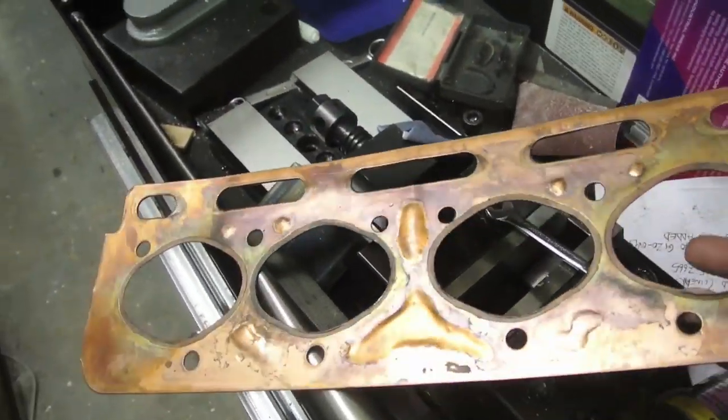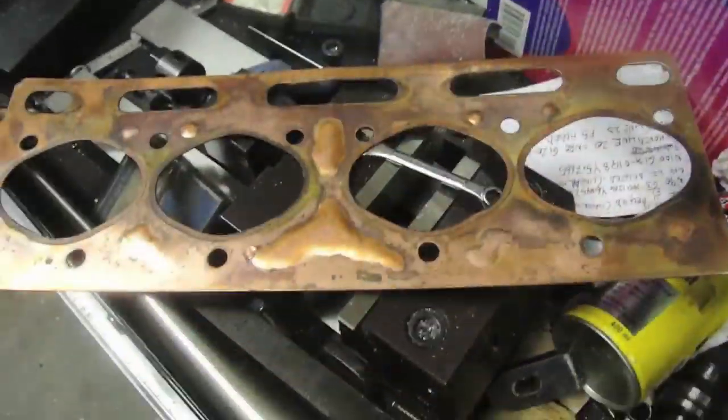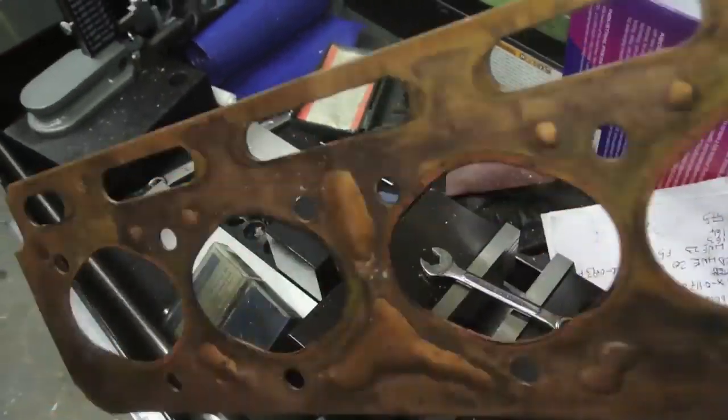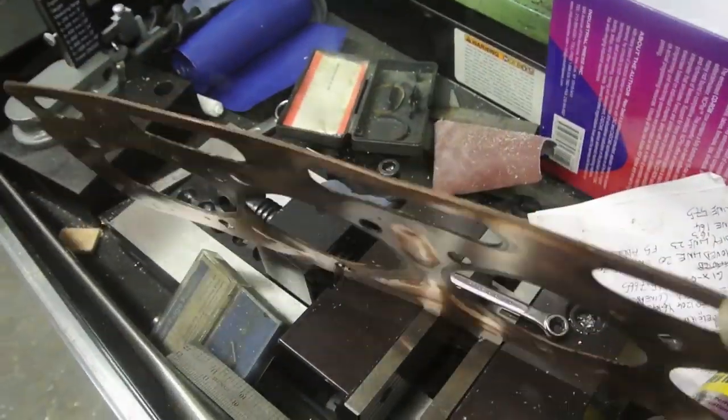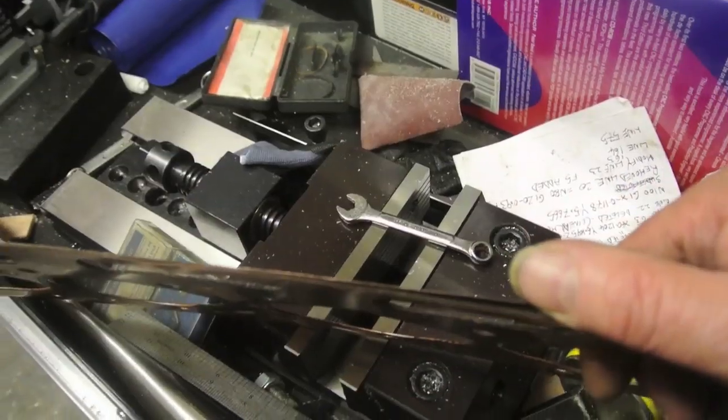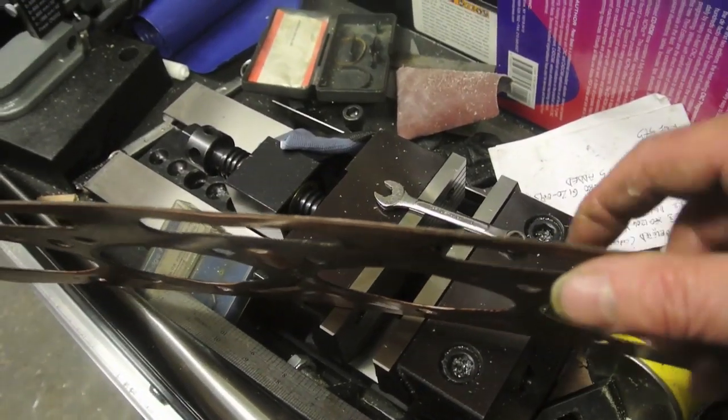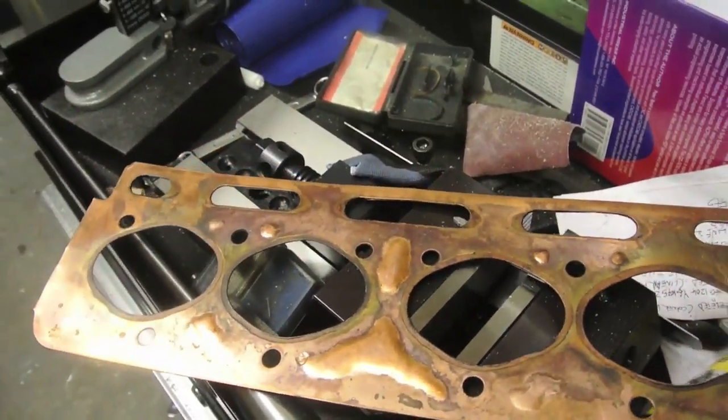Hi, this is a gasket for a 1920s Alvis. It's an early asbestos laminated gasket, two thin sheets of copper with a thin sheet of asbestos in between.